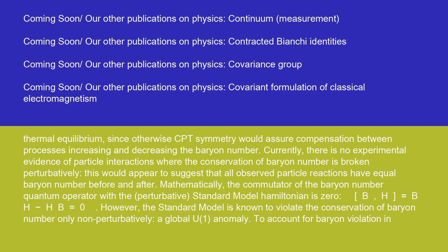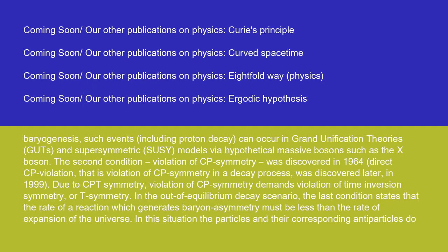To account for baryon violation in baryogenesis, such events, including proton decay, can occur in grand unification theories (GUTs) and supersymmetric SUSY models via hypothetical massive bosons such as the X boson.